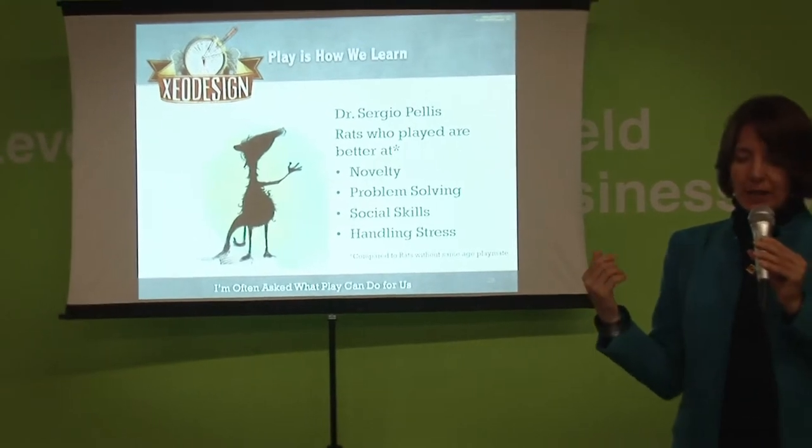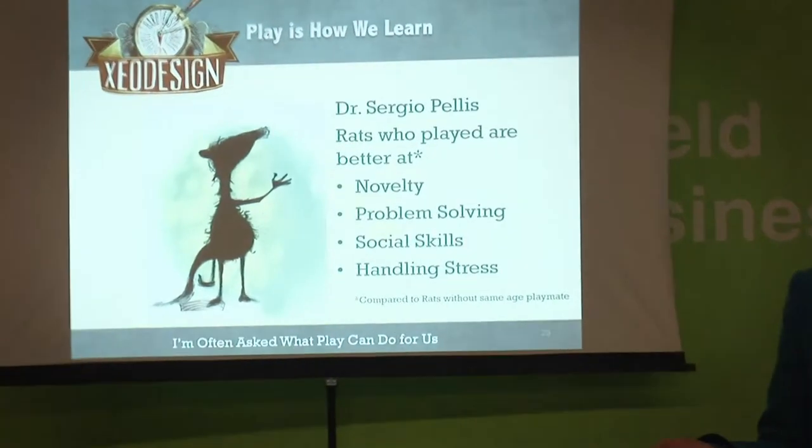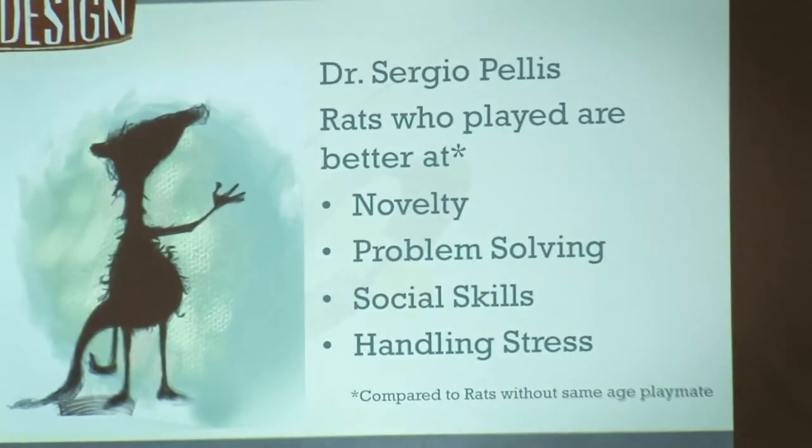There's interesting rat research by Sergio Peles and his associates. They found that rats that got to play with same-age playmates growing up were actually better at handling novel situations, better at problem solving, had better social skills, and were able to handle stress much faster than those who did not grow up with playmates. There's some really interesting stuff that happens in play on a deep neural level. Humans and other mammals are wired to play. So the short of it is: there are a lot of good reasons to play, and we shouldn't stop playing as adults.